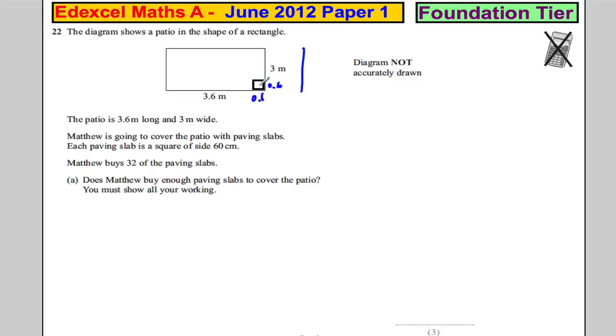Well, how many does he need to cover the height here? If he had 0.6 plus 0.6, that would be 1.2. Plus another 0.6 would be 1.8. Plus another 0.6 would be 2.4. Plus another 0.6 would be equal to 3 metres. So 1, 2, 3, 4, 5. He needs 5 slabs for the width, which is 3 metres.